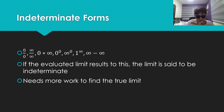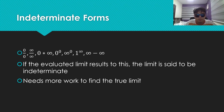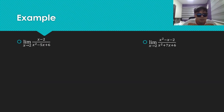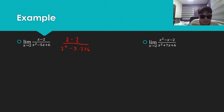Now let's talk about indeterminate forms. The indeterminate forms are: 0 over 0, infinity over infinity, 0 times infinity, 0 to the power 0, infinity to the power 0, 1 to the power infinity, and infinity minus infinity. If you evaluate a limit and it results in any of these, the limit is said to be indeterminate — it's not undefined, it's indeterminate. We need more work to find the true limit. For example, evaluating the first one: we get 2 minus 2 over 2 squared minus 5 times 2 plus 6, which gives 0 over 4 minus 10 plus 6, which is 0 over 0 — an indeterminate form. Therefore, we have to do more work.